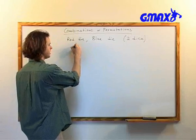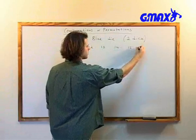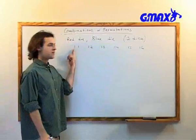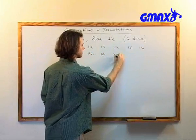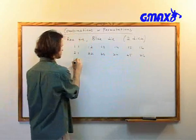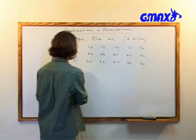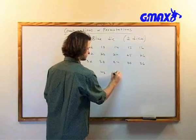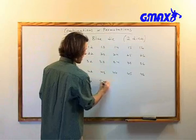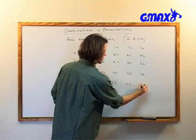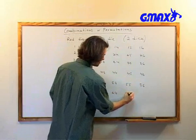So the first way is just to write all the different possible outcomes. I can get one on the red die and then any of the numbers from one to six on the blue die. And the same for two. Basically, I'm writing out all of the possible options that can happen in this scenario. In this case, we've chosen an example where, as you can see, it's actually possible to do that.